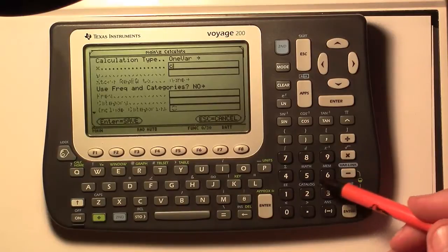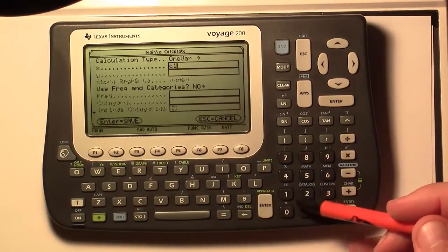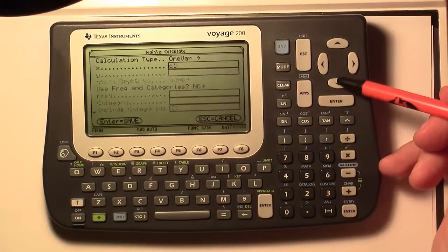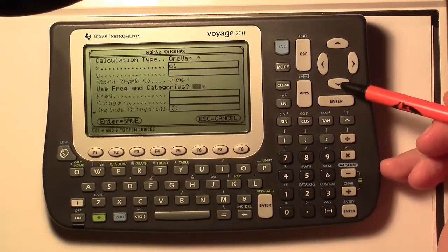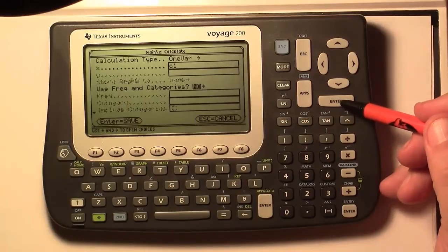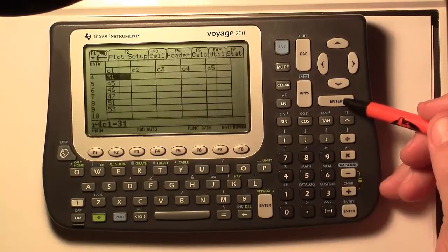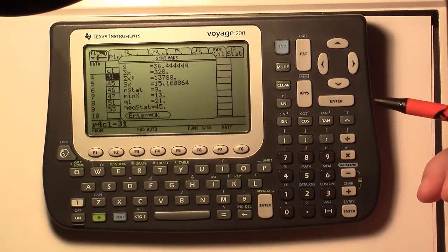Then down arrow. And it says use frequency and categories. Just down arrow now. We don't want any of that. Actually, I'm ready to just press enter. You probably have to enter twice. Or maybe once.